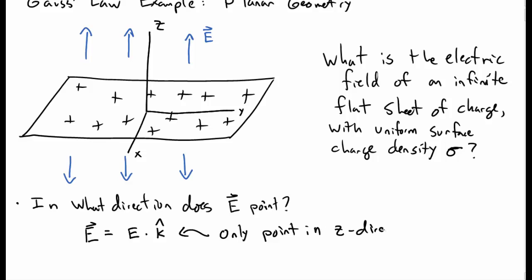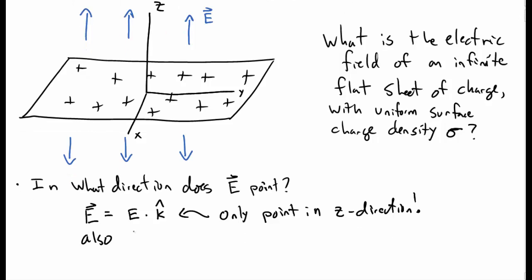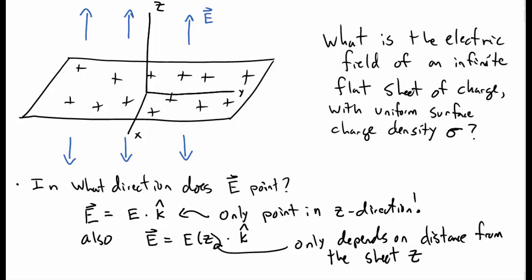But we can be a little bit more specific. We can actually say that the electric field should also only depend on the z-direction. So the electric field should just be some function of z pointing in the z-direction. And that's because, of course, it shouldn't depend on the x and y-directions. It's an infinite sheet. It only depends on your distance from the sheet itself. There's a symmetry in the plane. It shouldn't depend on those directions.